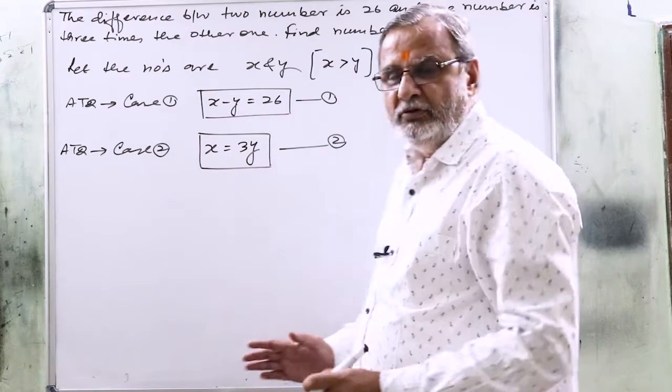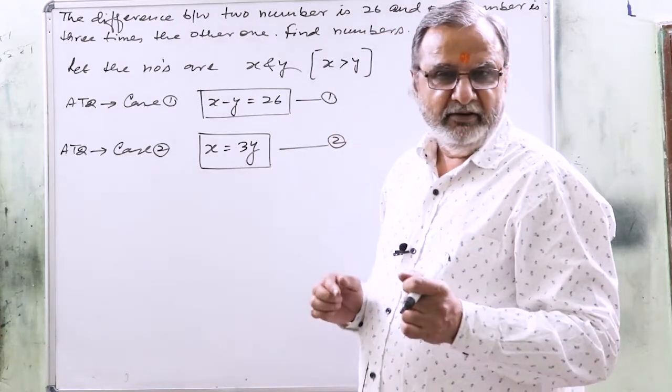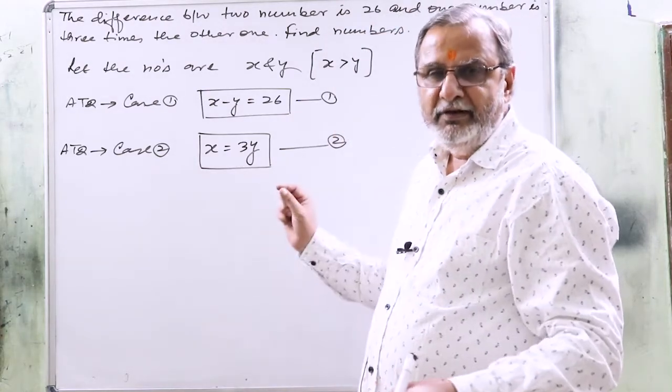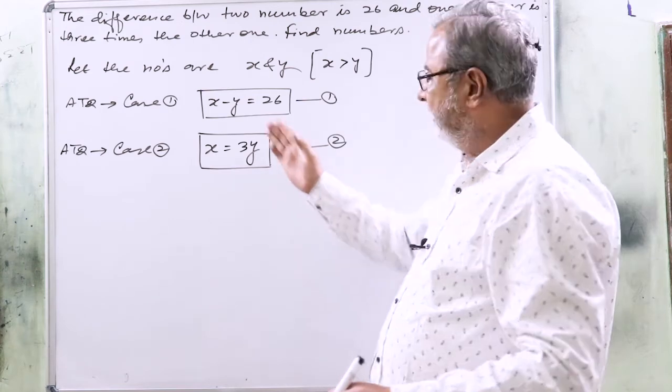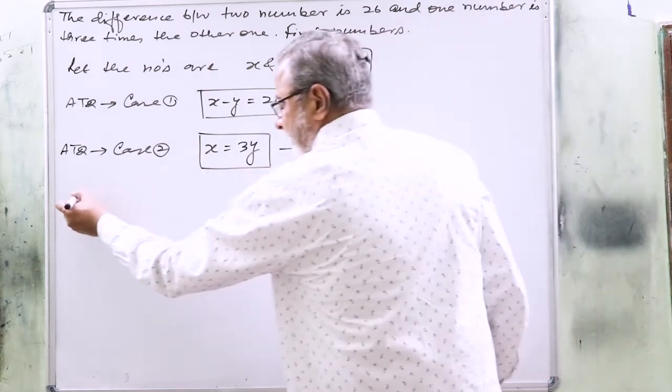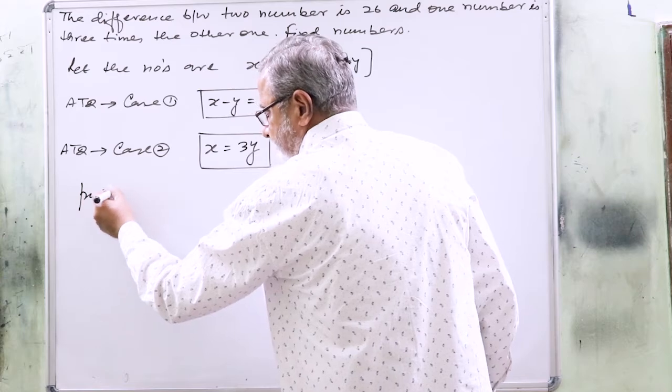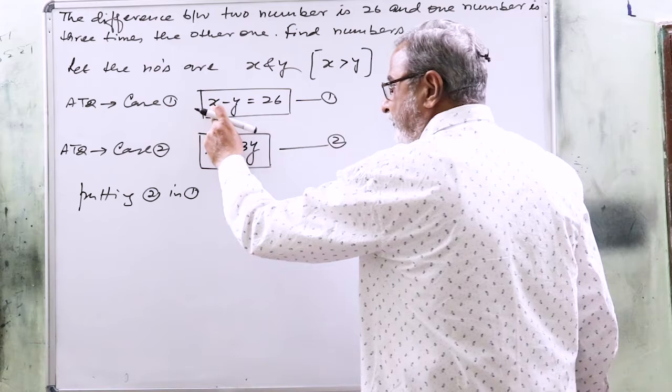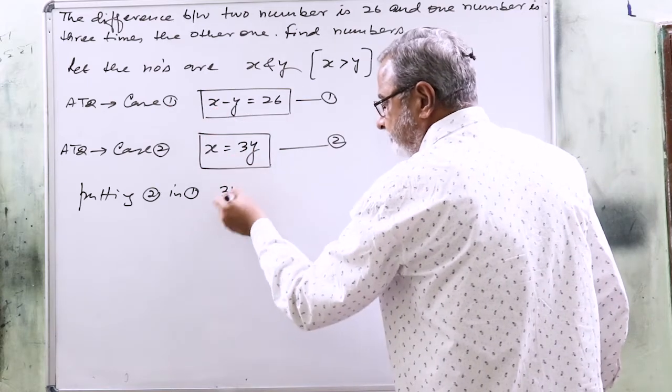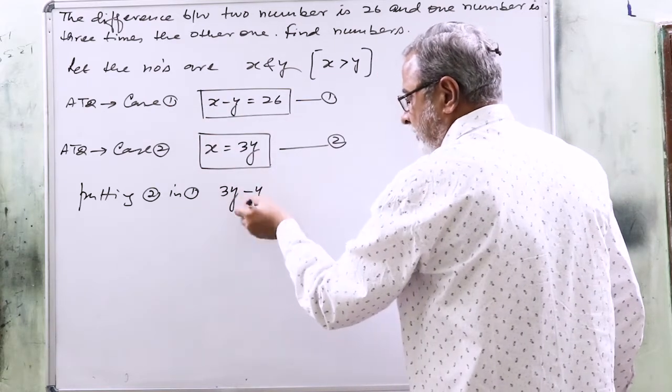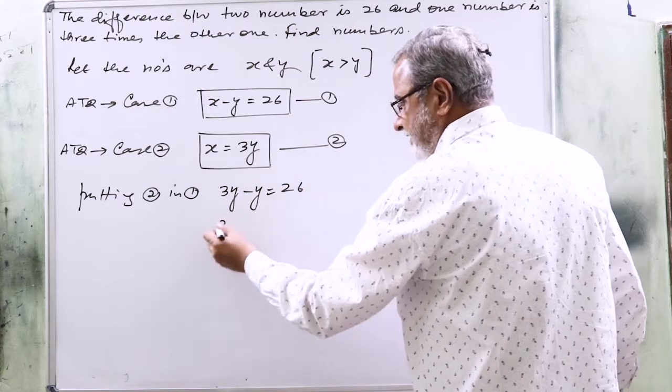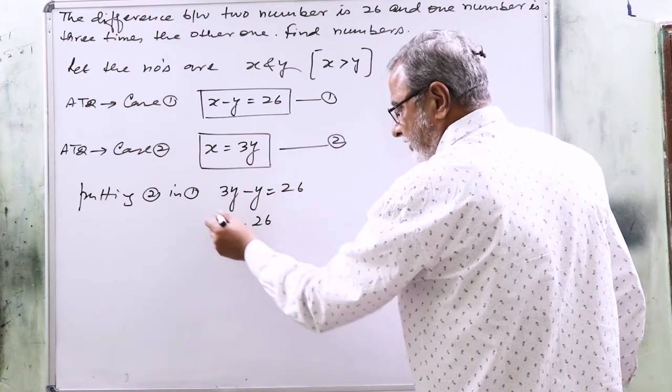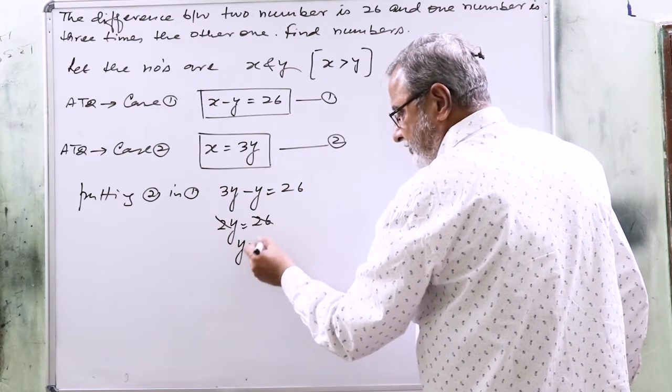Now we are learning the substitution method. That is why I will use the substitution method in this question. So I am putting equation 2 in 1. Instead of x, I write 3y minus y equals 26, and 2y equals 26, and y equals 13.